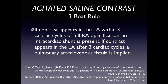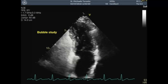How do we tell whether it's more likely to be an intracardiac shunt versus a transpulmonary shunt? There's a three-beat rule — a general guide, not definitive. If contrast bubbles appear in the left side, particularly the left atrium going into the left ventricle, within three cardiac cycles of full right atrial opacification, an intracardiac shunt is present. If it's after three cardiac cycles, a pulmonary AV fistula or AV malformation is implied. Less than three cycles is more likely intracardiac; greater than five is more likely transpulmonary; between three and five is a gray zone with lots of caveats.